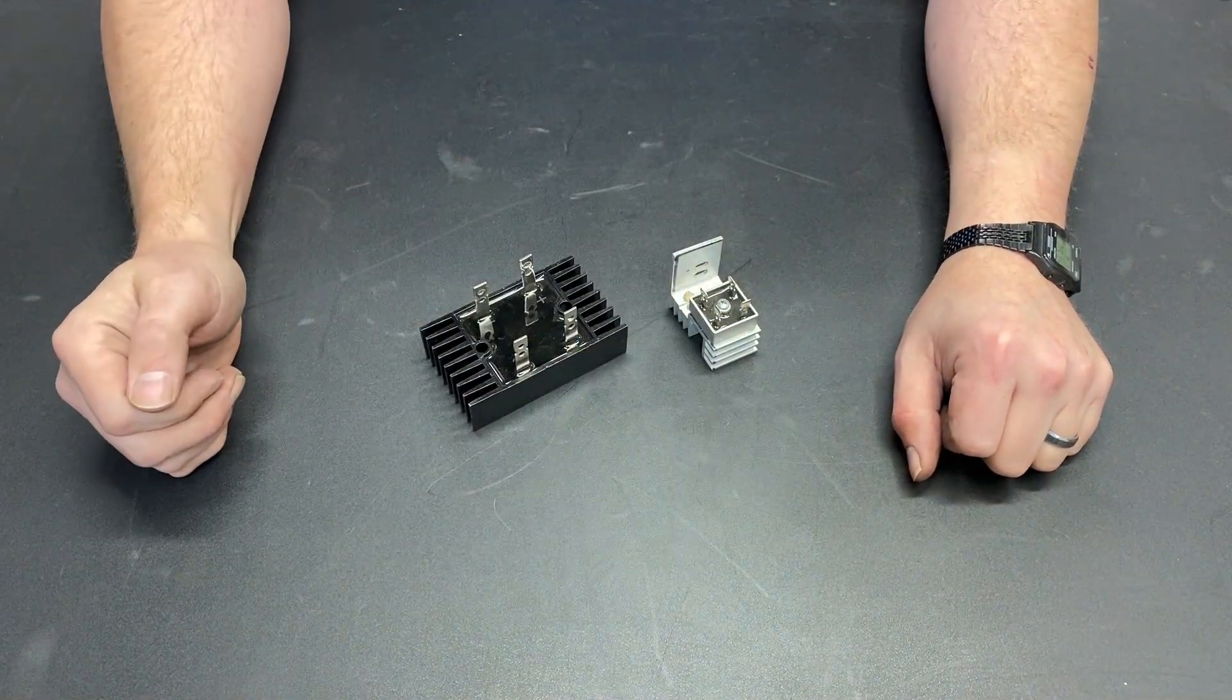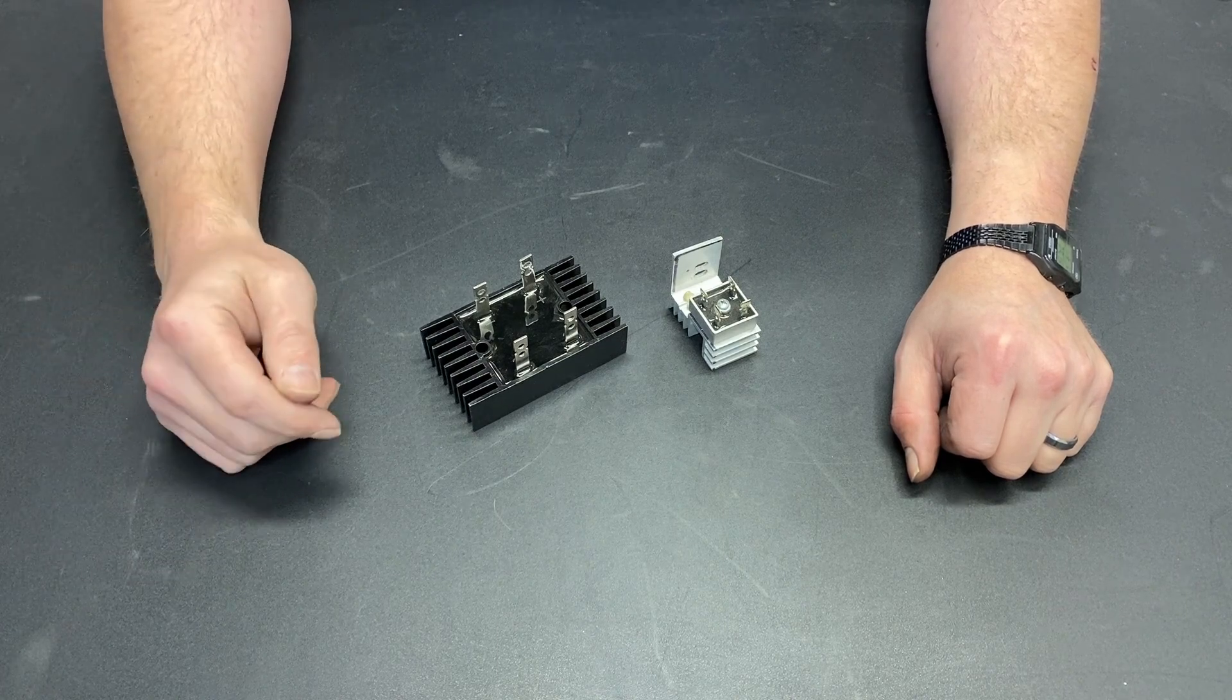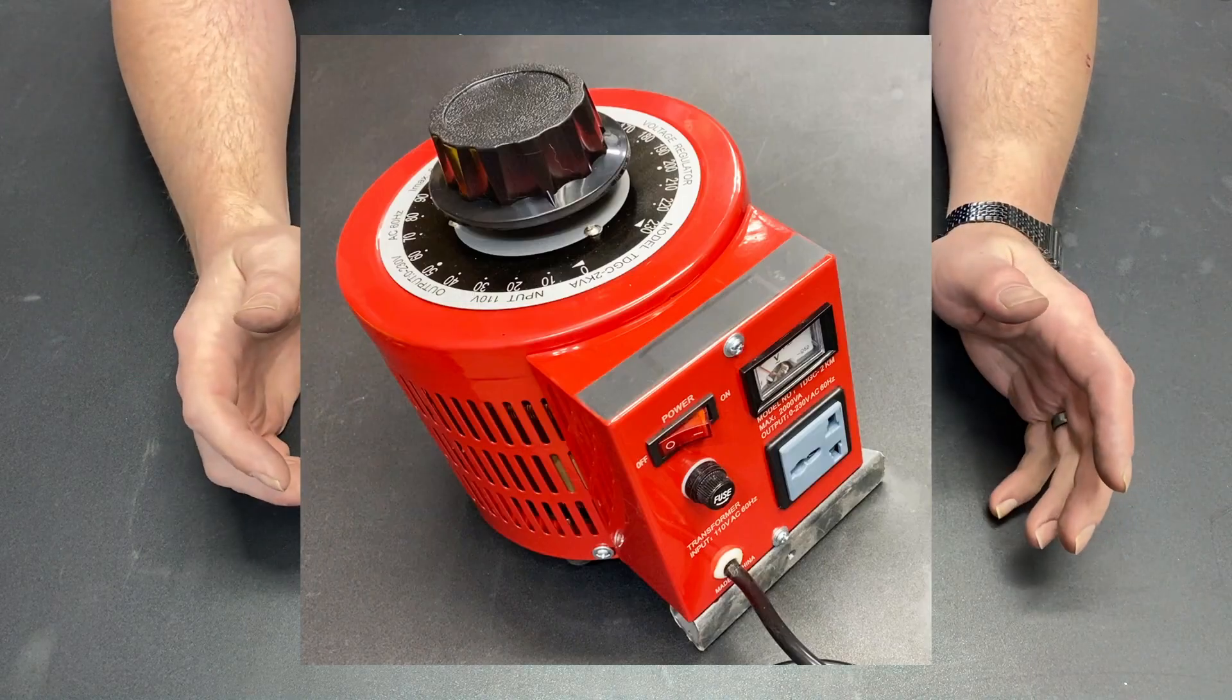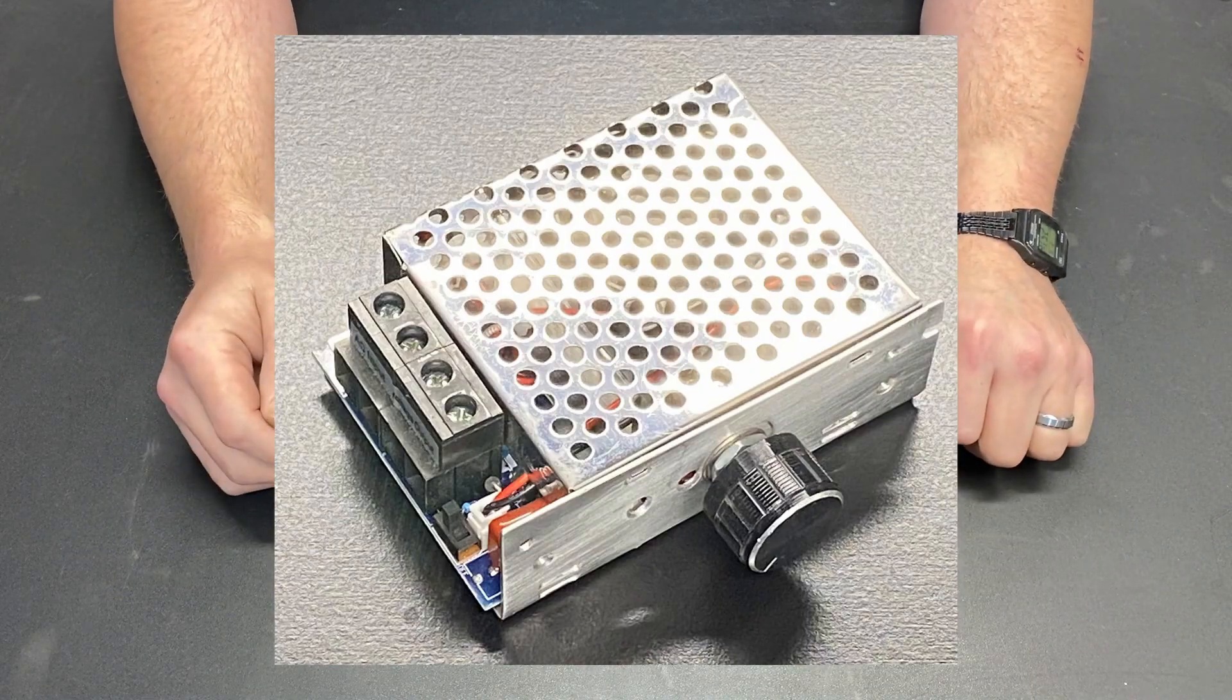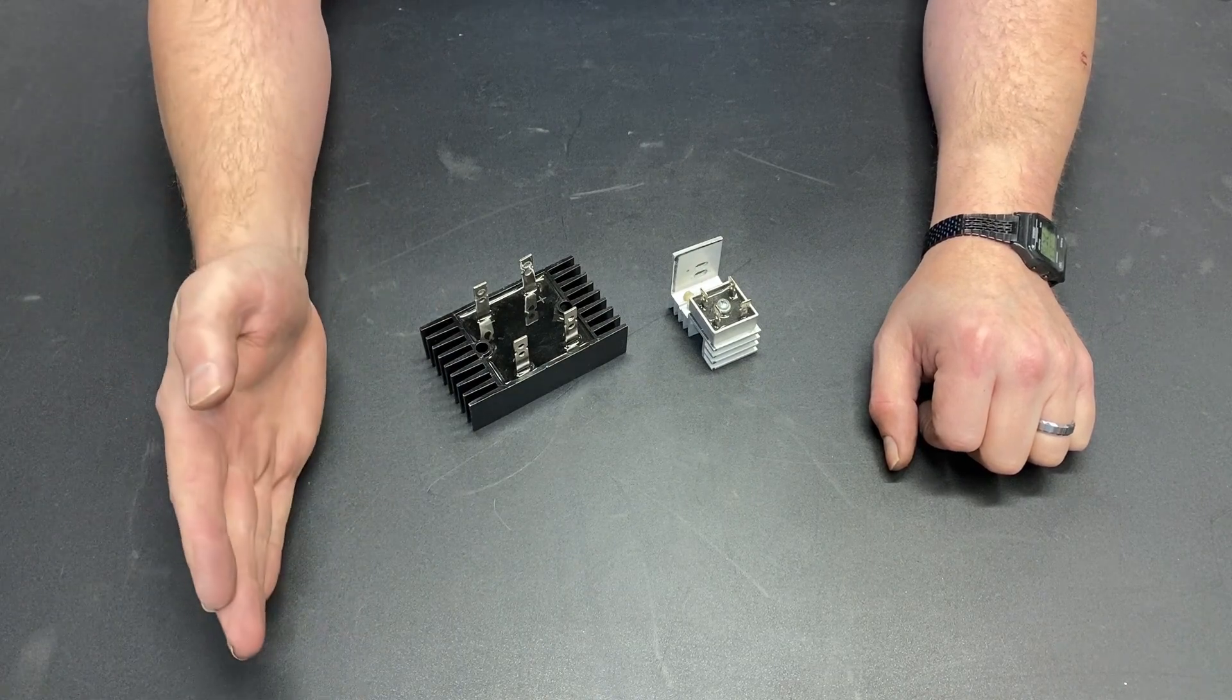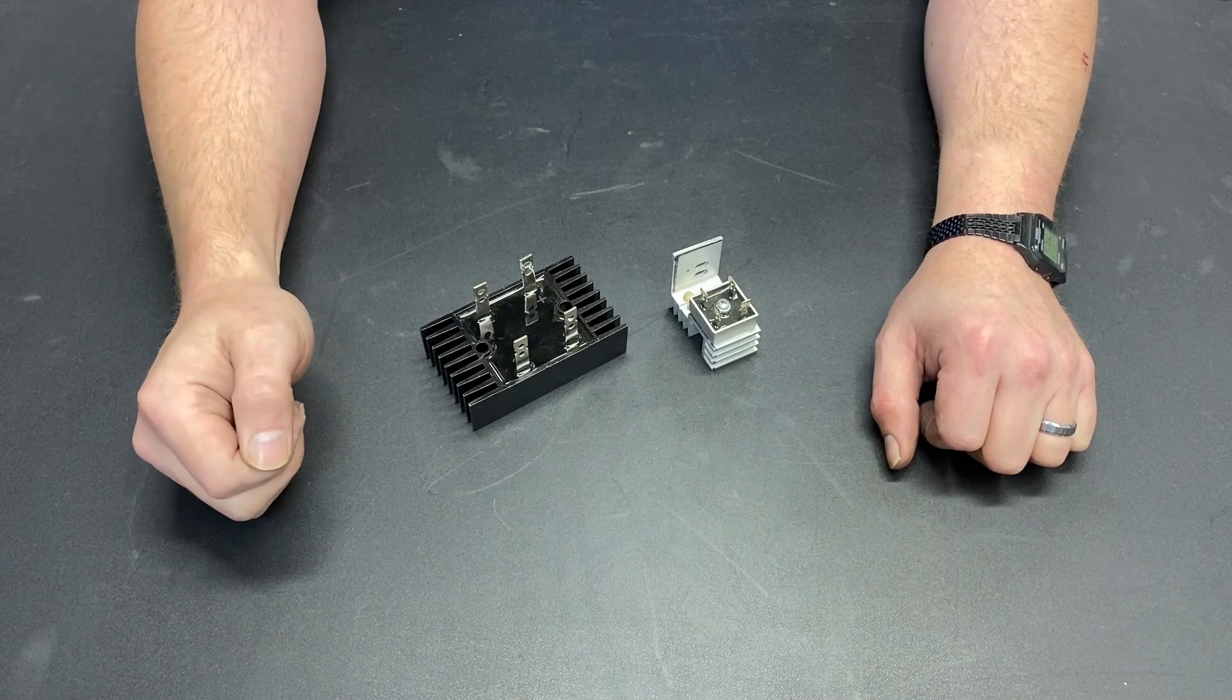Bridge rectifiers. If you're powering a treadmill motor, which is more often than not a DC motor, with a variable transformer or an SCR voltage controller, you've got to have a way to convert AC current into DC current. And that's what a bridge rectifier does.